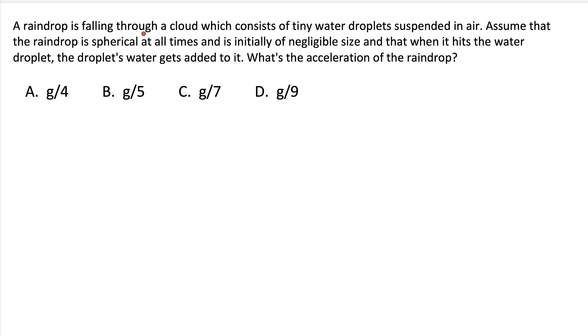Let's read through the question. A raindrop is falling through a cloud which consists of tiny water droplets suspended in the air. Assume that the raindrop is spherical at all times and is initially of negligible size, and that when it hits the water droplet, the droplet's water gets added to it. So what's the acceleration of the raindrop?